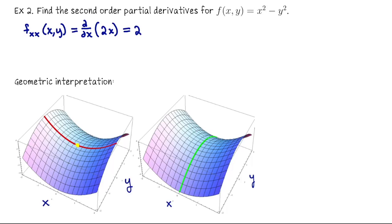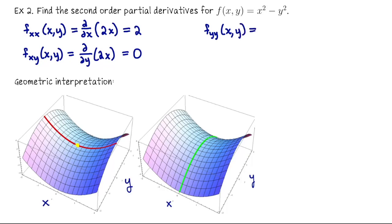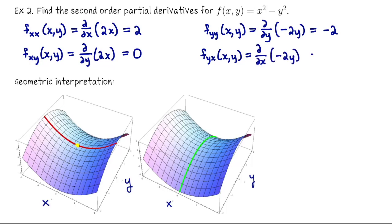Now let me do f sub xy. That means d/dy of f sub x. So that's d/dy of 2x, which is 0. f sub yy would be d/dy of df/dy. So that's going to be d/dy of −2y, which is −2. And f sub yx would be d/dx of df/dy. So that would be d/dx of −2y, which is 0.